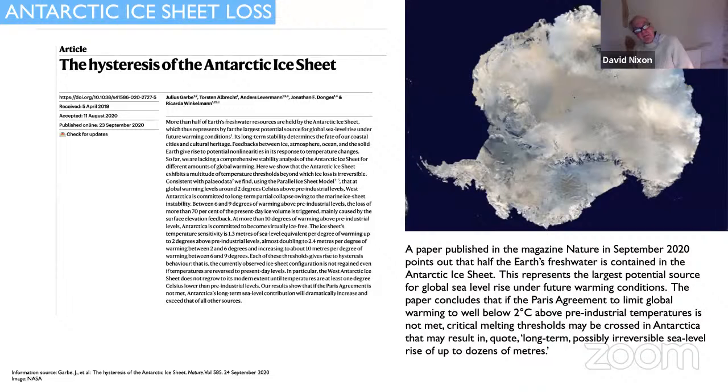This paper, produced by a group of scientists called the Hysteresis of the Antarctic Ice Sheet, really scared me when I read it for the first time. I'm going to try and explain this in a bit of detail about what the situation is with Antarctica. I'm using an analogy of a car. When you put your foot on the accelerator of a car, it goes faster pretty well almost instantaneously. And when you take your foot off the accelerator, the car slows down.